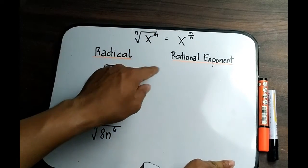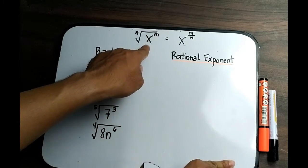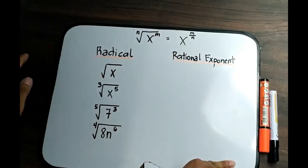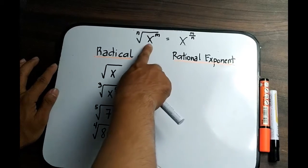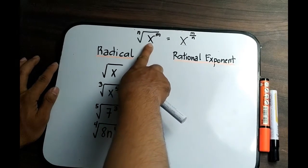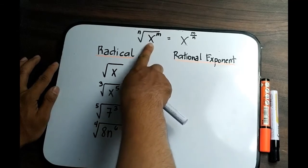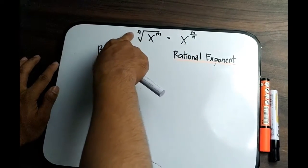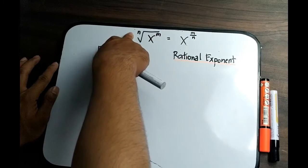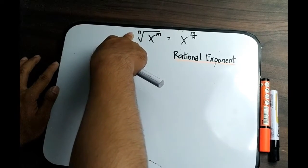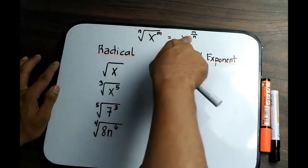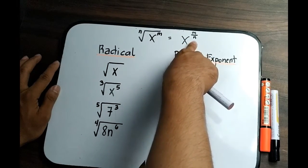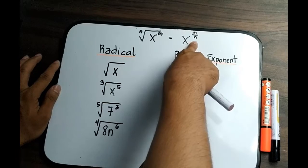As you can see, we have three variables: x, n, and m. The variable x is what you call the radicand — this is the base. The variable n in the radical expression is what you call the index, and in the expression with rational exponents, it becomes the denominator of your exponent.